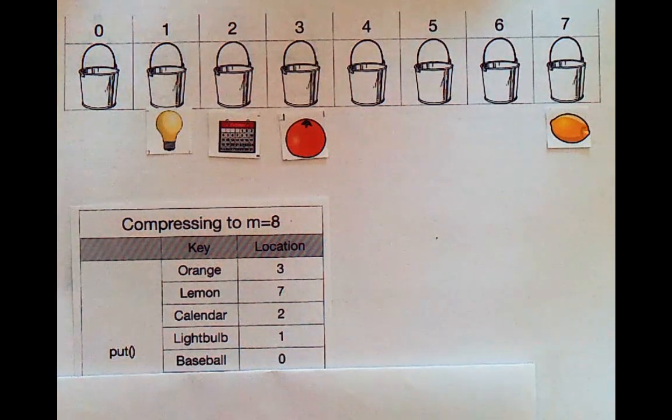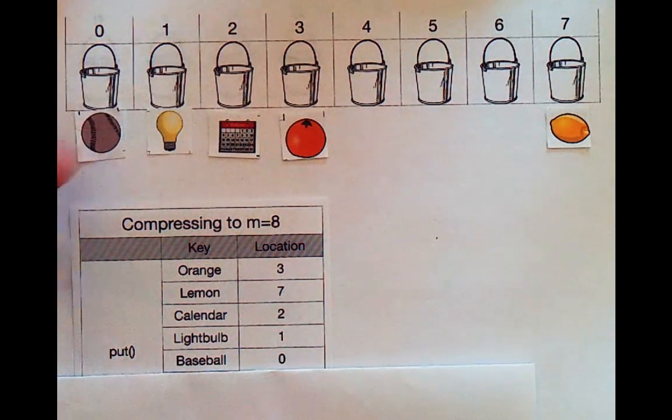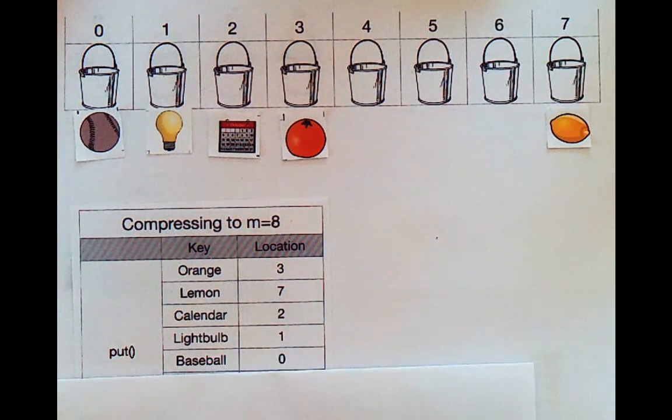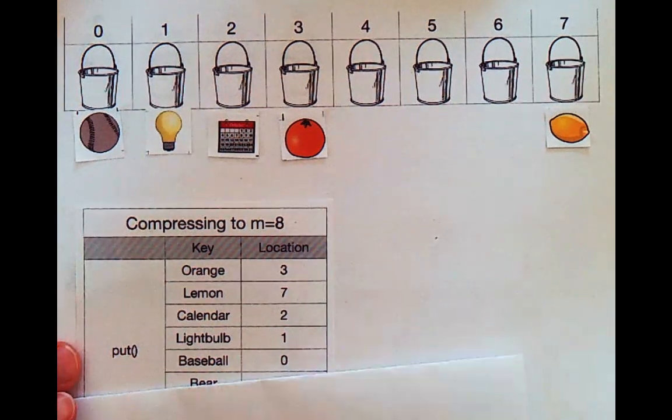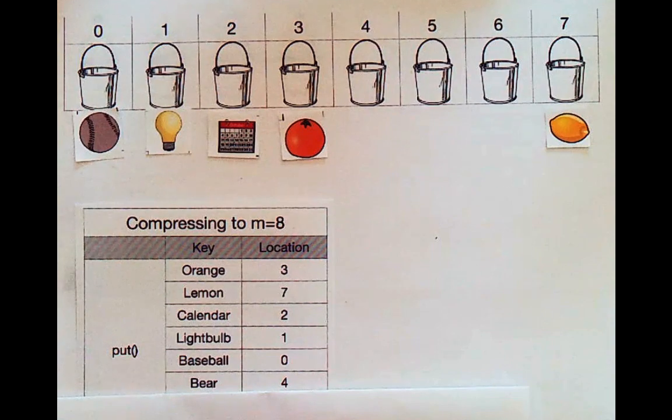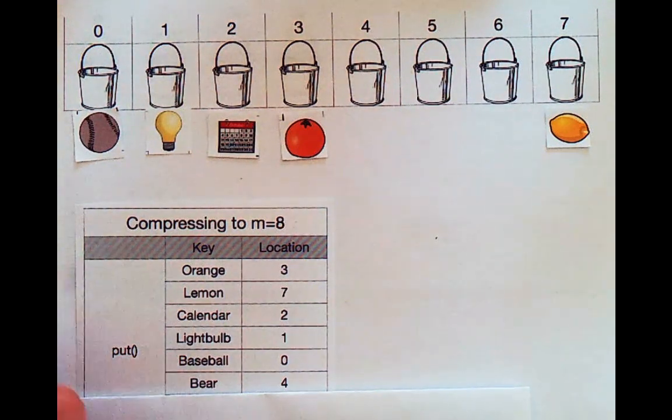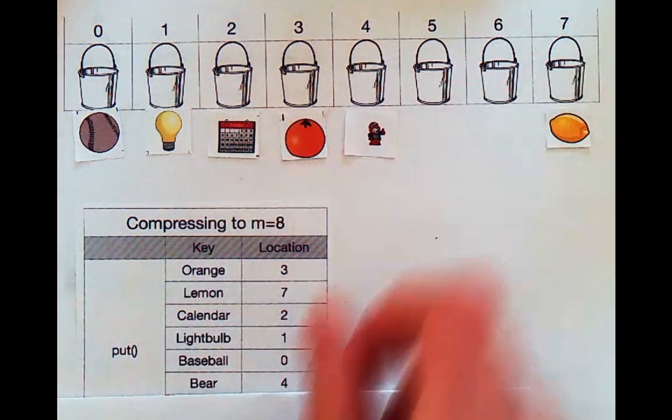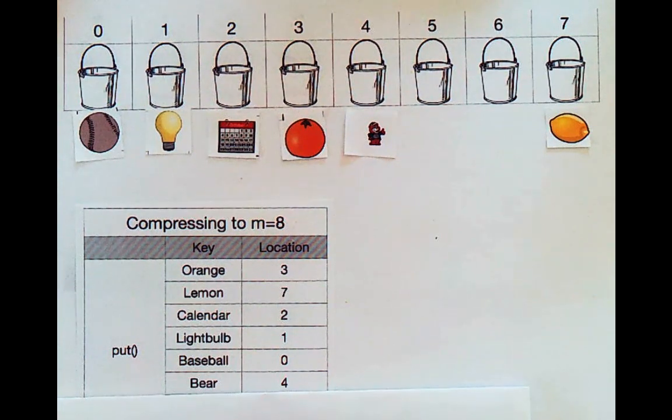Baseball belongs in bucket zero. So now we're up to five out of eight. And now our bear belongs in bucket four. So we're at six out of eight. We're now at 75%. So once again, we would go ahead and rehash at this point.